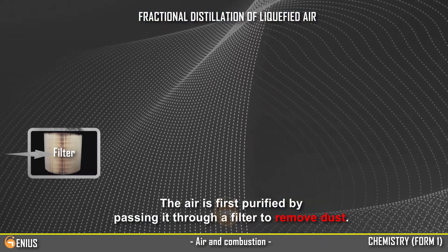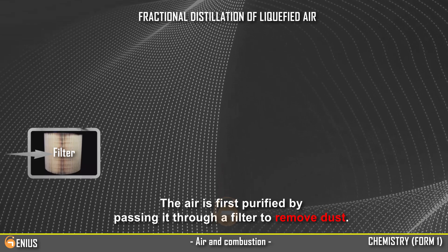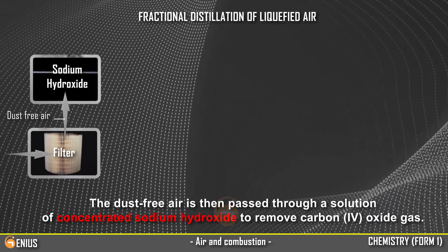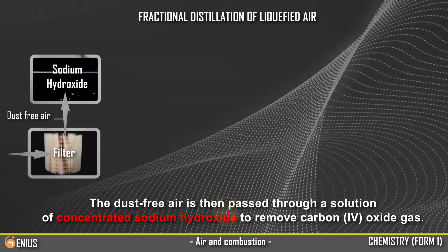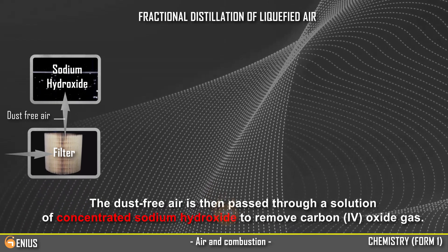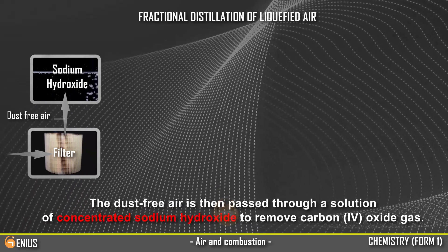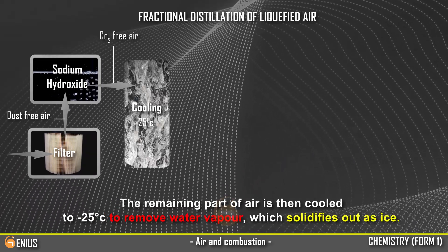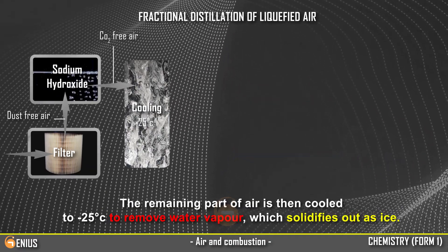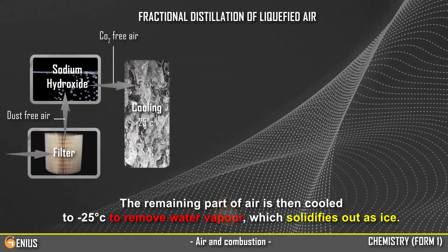The air is first purified by passing it through a filter to remove dust. The dust-free air is then passed through a concentrated sodium hydroxide solution to remove carbon dioxide gas. The remaining part of air is then cooled to minus 25 degrees Celsius to remove water vapor, which solidifies out as ice.